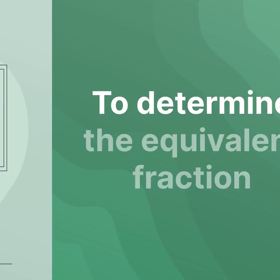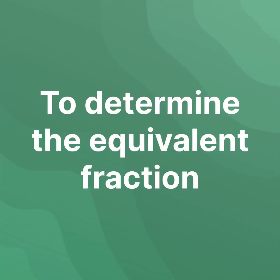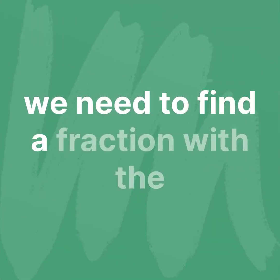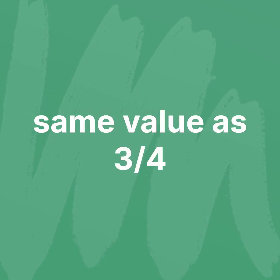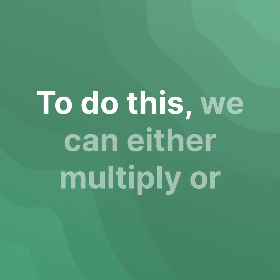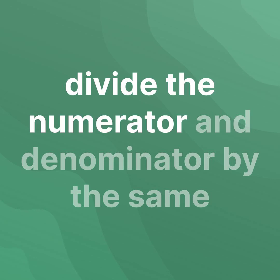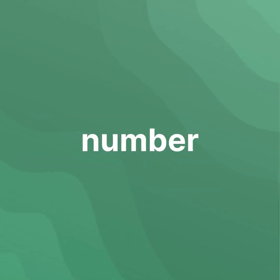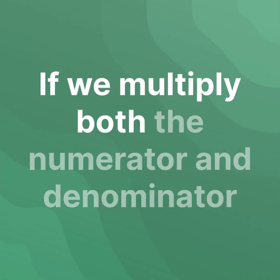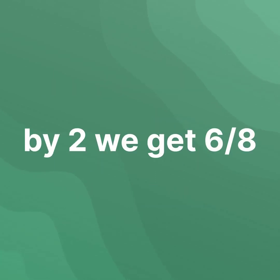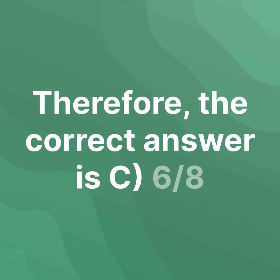To determine the equivalent fraction, we need to find a fraction with the same value as three-fourths. To do this, we can either multiply or divide the numerator and denominator by the same number. If we multiply both the numerator and denominator by 2, we get six-eighths. Therefore, the correct answer is C. Six-eighths.